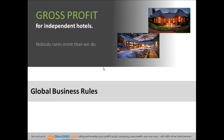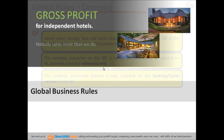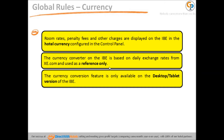Here are some additional business rules to remember on the internet booking engine. Room rates, penalty fees, and other charges are displayed in the hotel currency configured in the control panel. The currency converter is based on daily exchange rates from xe.com and is used for reference only. The currency conversion feature is only available on the desktop and tablet version of the internet booking engine.